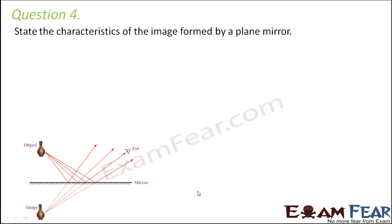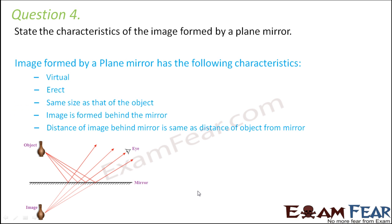Question number 4. State the characteristics of the image formed by a plane mirror. What kind of images are formed by plane mirror? It is virtual, formed on the other side of the mirror, erect, same size as that of the object.